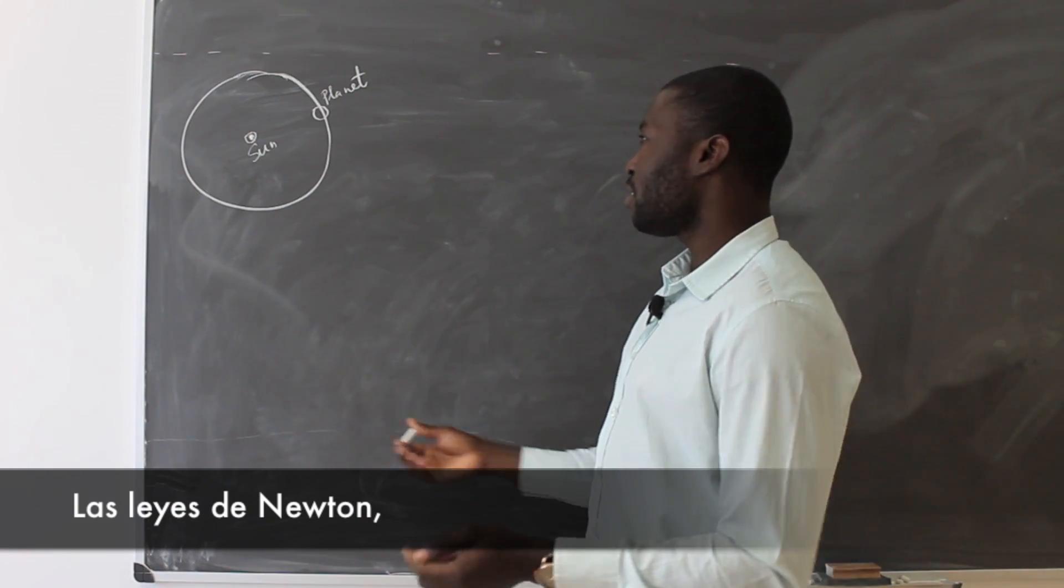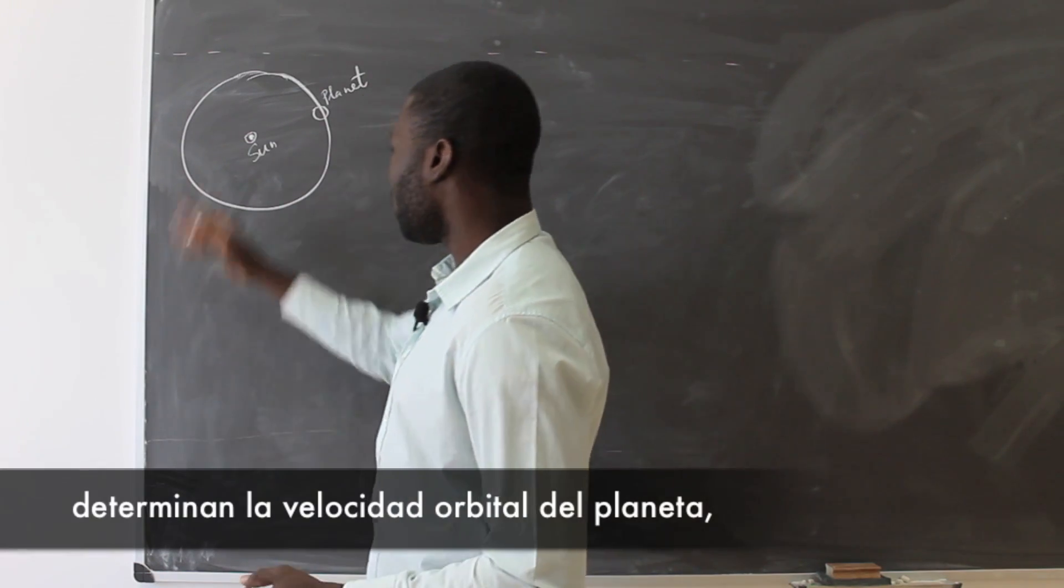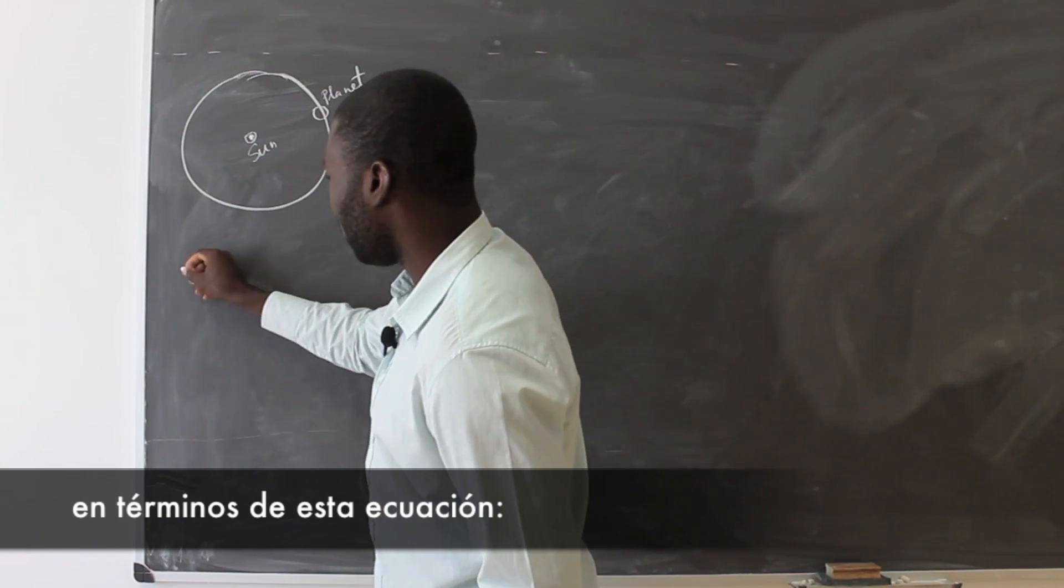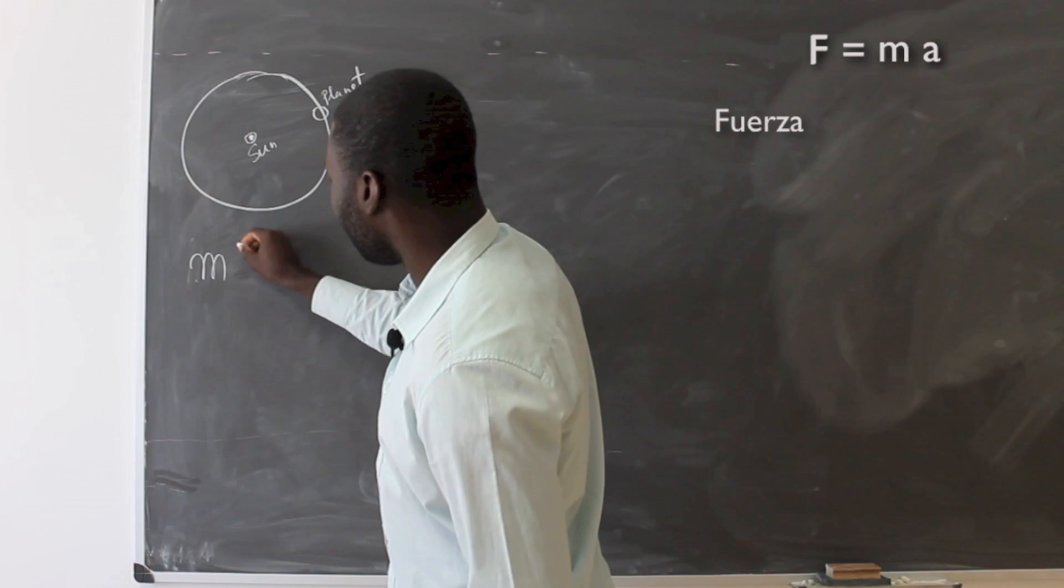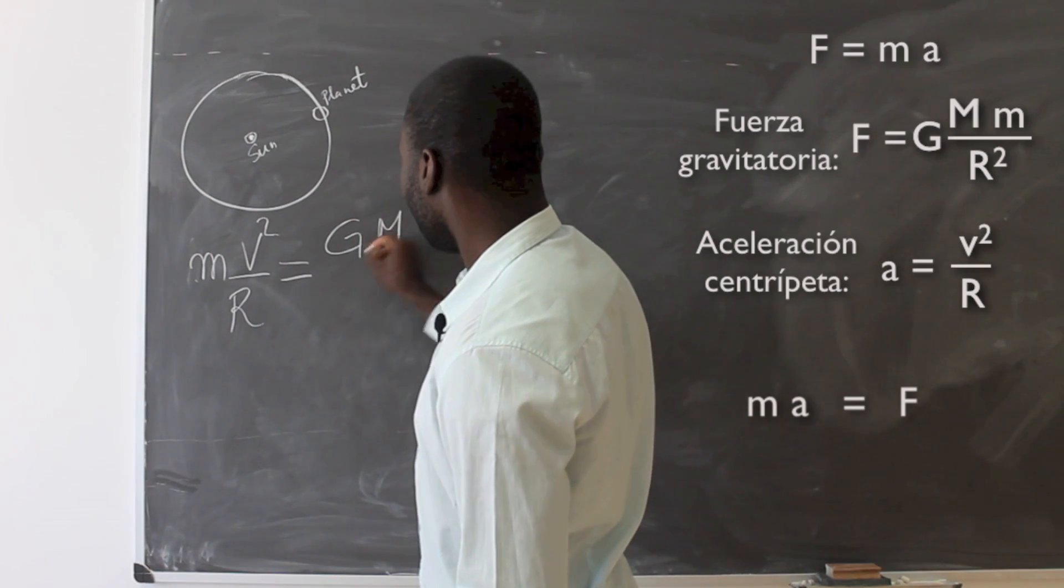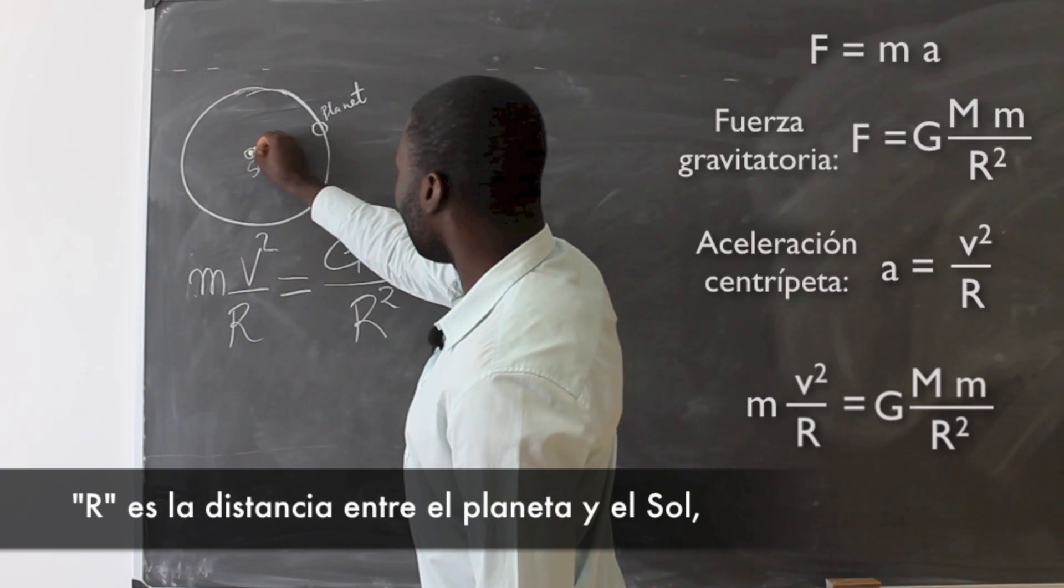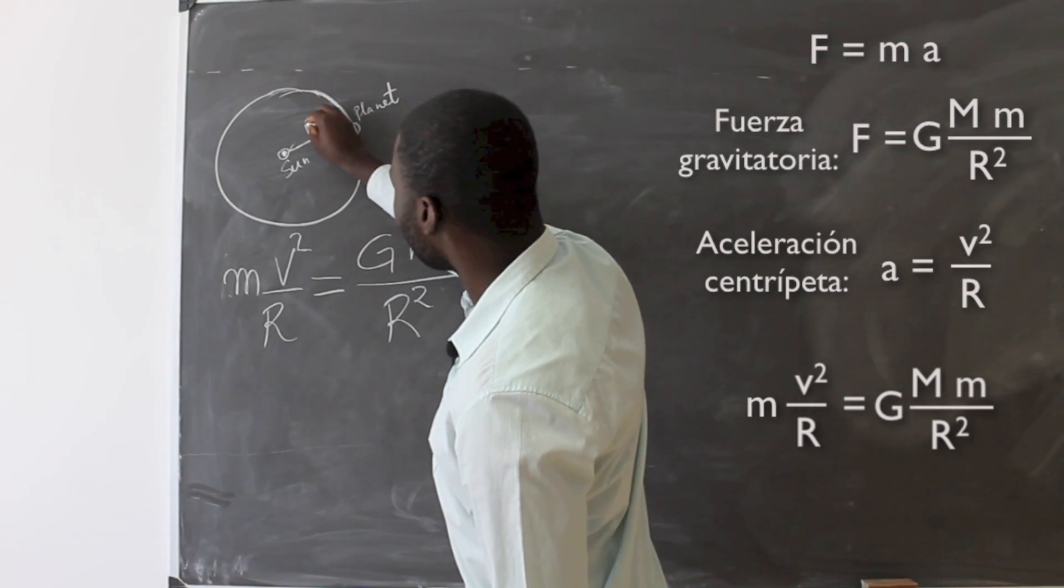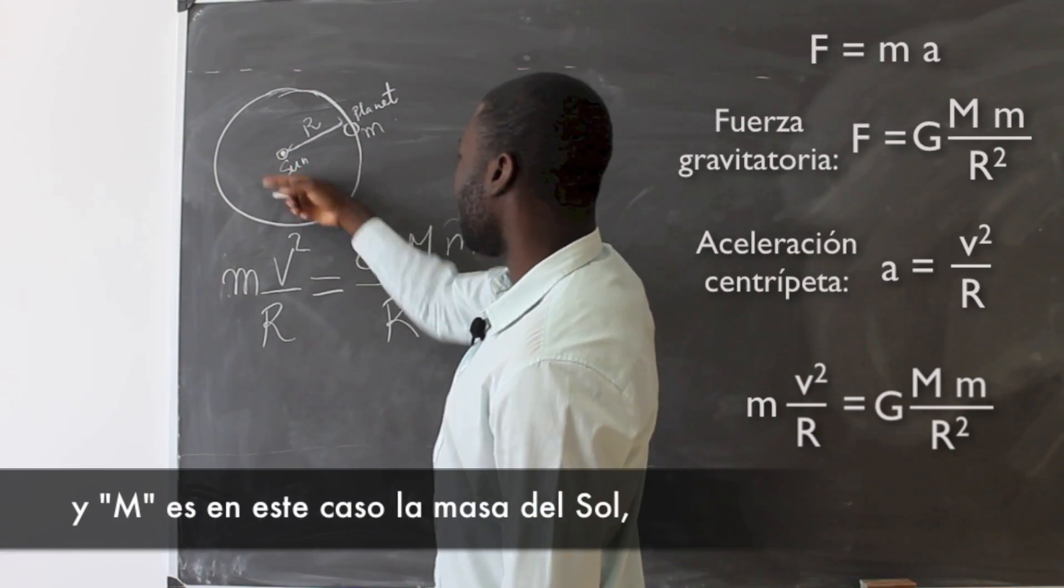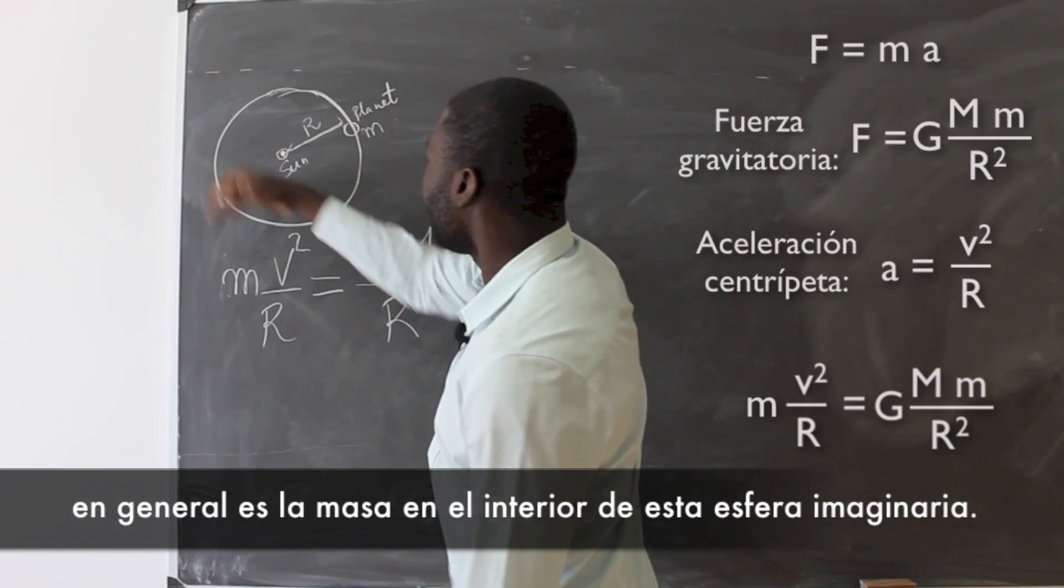So Newton's laws of gravity tells us that from the motion of this planet around the Sun, if you want to know the orbital velocity of this planet, it is simply given by this relation. R is the distance of the planet to the Sun, little m is the mass of the planet, and capital M is typically the mass of the Sun, which is the most heaviest which should be around in this imaginary sphere.